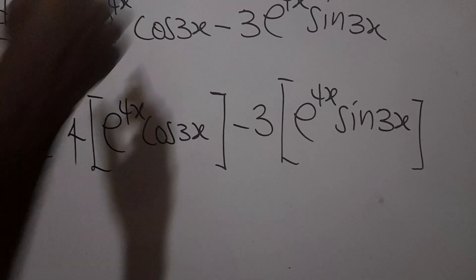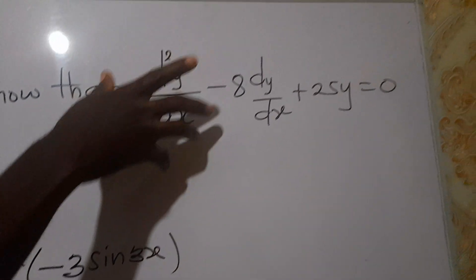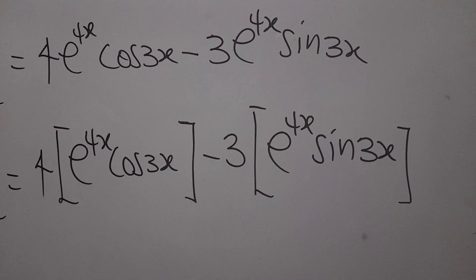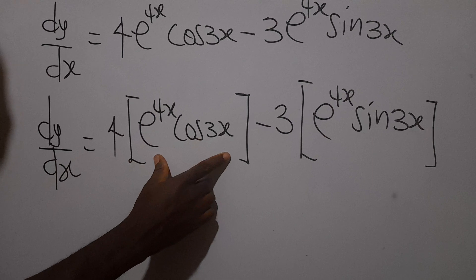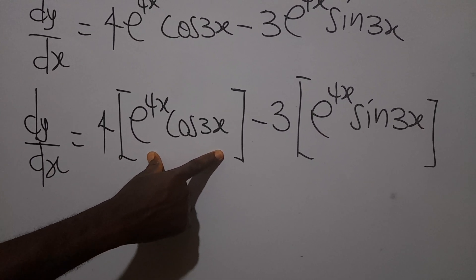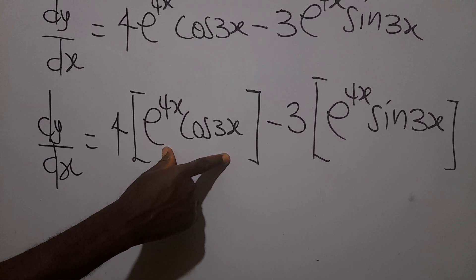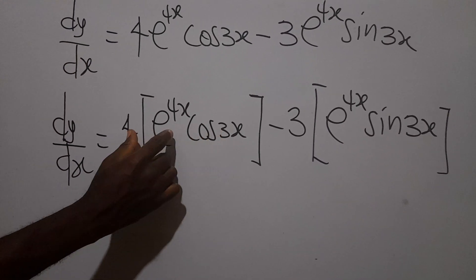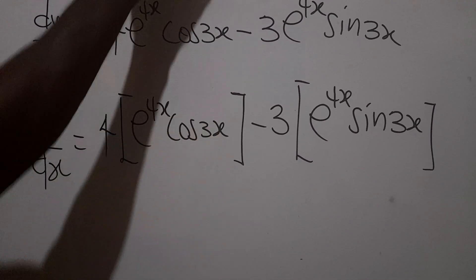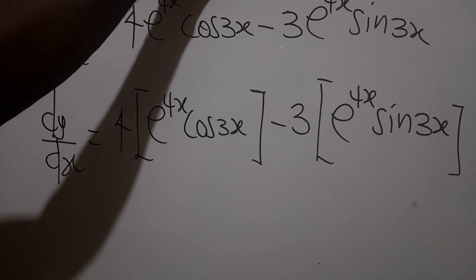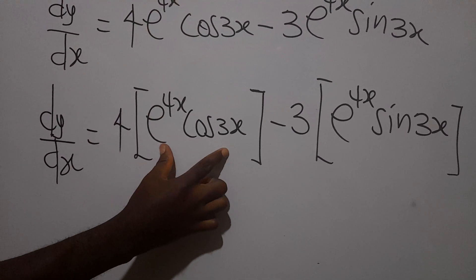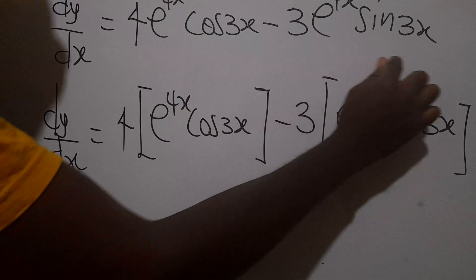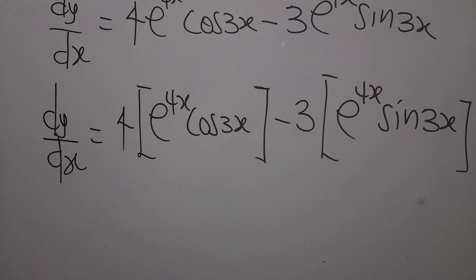Now remember, our proof is of the second order, so we need to find the second derivative of this function. We differentiate the first derivative to find the second derivative, the same way. There are two product rule applications here. However, this e^(4x)cos(3x) is what we differentiated earlier, so the differential of this is already known.